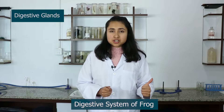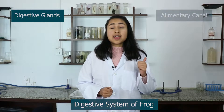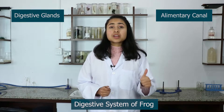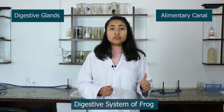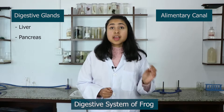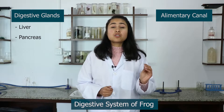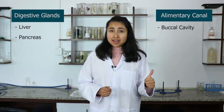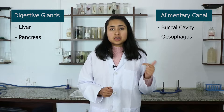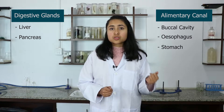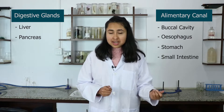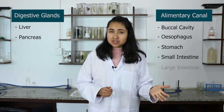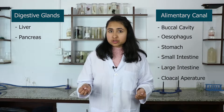Today we are going to expose the digestive system of frog. The digestive system of frog contains digestive glands and an alimentary canal. The digestive gland consists of liver and pancreas. The alimentary canal of frog consists of buccal cavity, esophagus, stomach, small intestine, large intestine, and cloacal aperture.